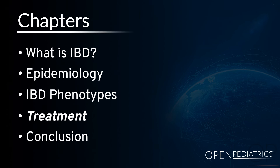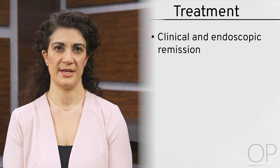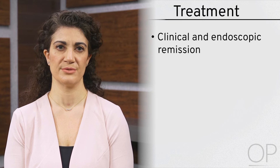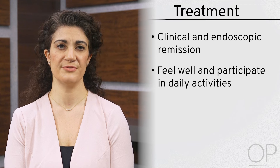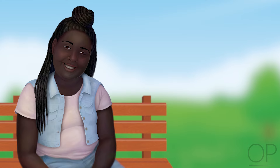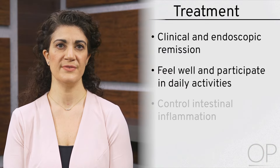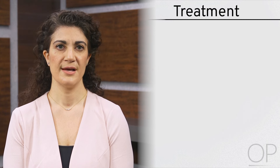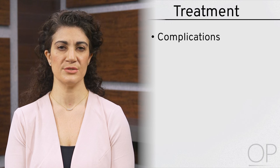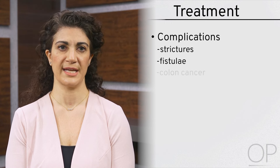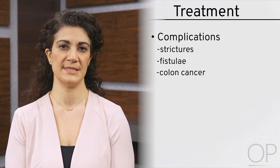Treatment. The goal of treatment is clinical and endoscopic remission — that is, for the patient to be symptom-free with restoration of healthy intestinal tissue. We also strive for patients to feel well and participate fully in school, work, and other activities without restriction. In the long term, control of intestinal inflammation is also important in prevention of complications of disease. Complications of chronically uncontrolled intestinal inflammation can include strictures, fistula, and colon cancer, but these risks may be reduced with disease treatment.